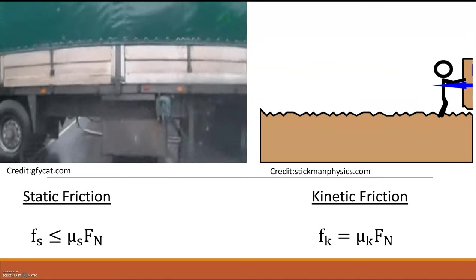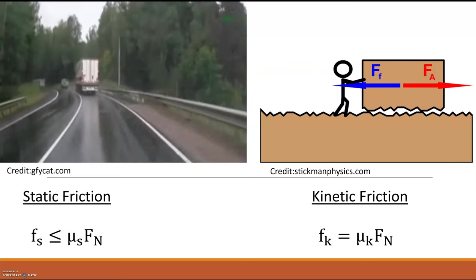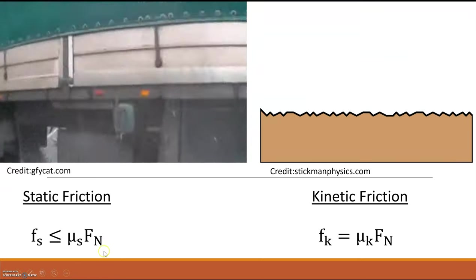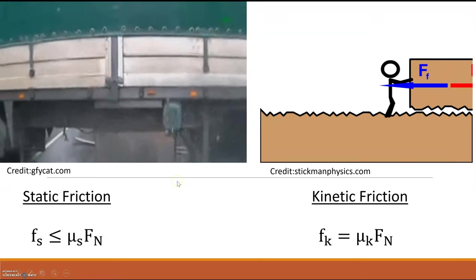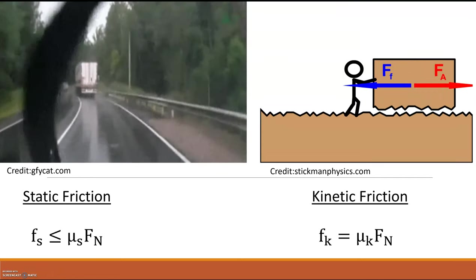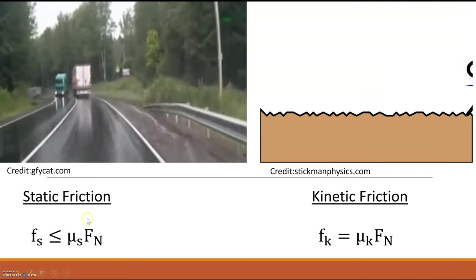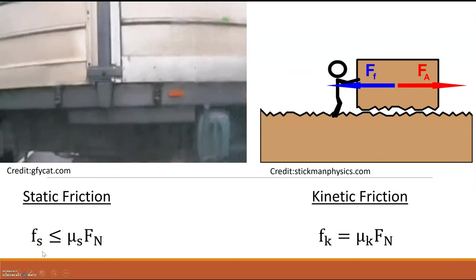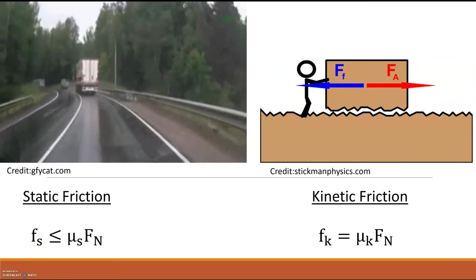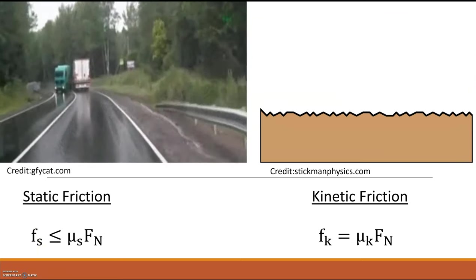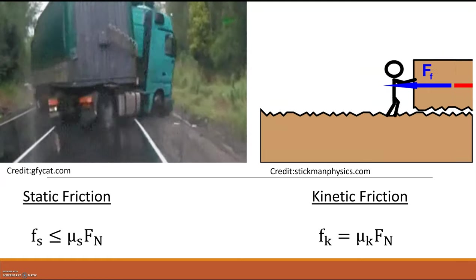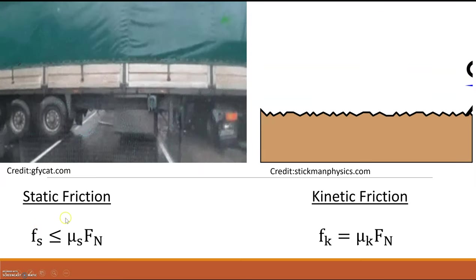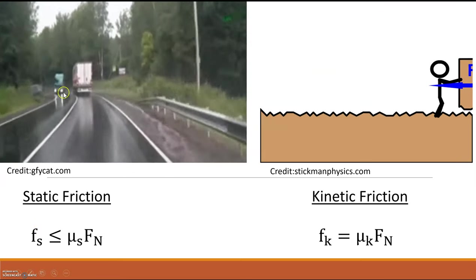When it rains, instead of just asphalt now, we have a layer of water molecules on top, and those water molecules have a lower coefficient of friction because they're smoother than the asphalt. If the coefficient decreases, the frictional force decreases. If that frictional force decreases, you can't have as much force coming from your engine. You can't rotate your tires too fast or the static friction can't keep up, and at that point, that's when your car starts to slide.